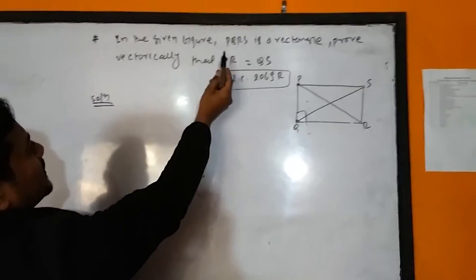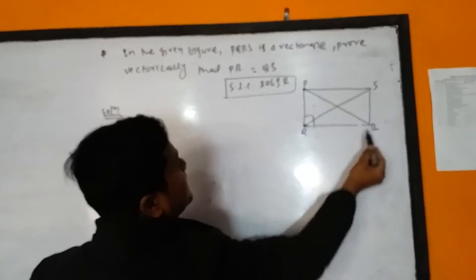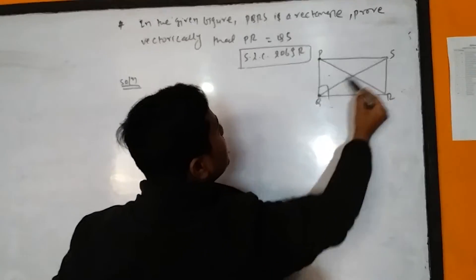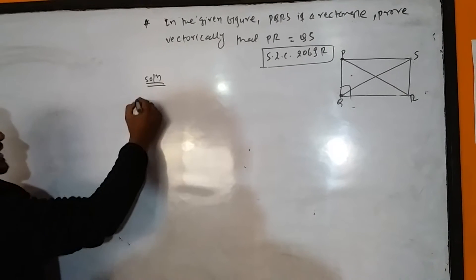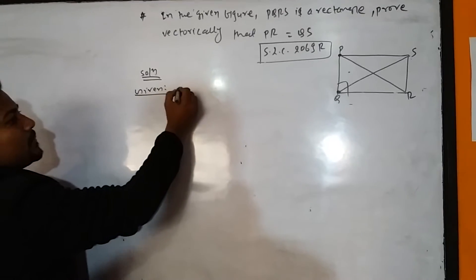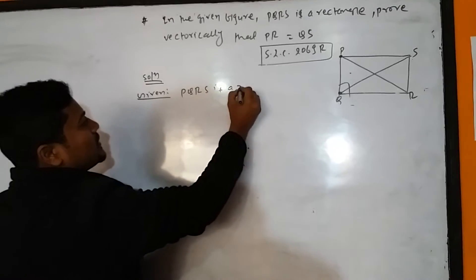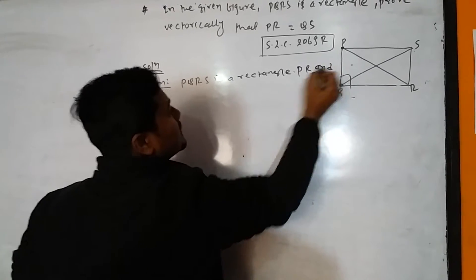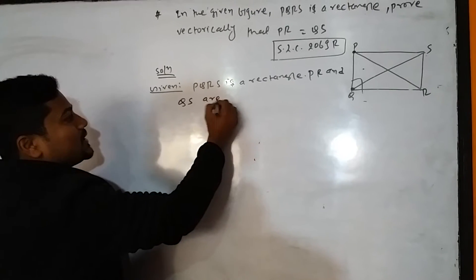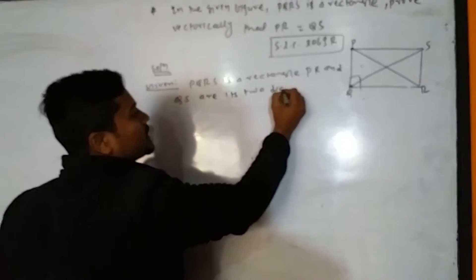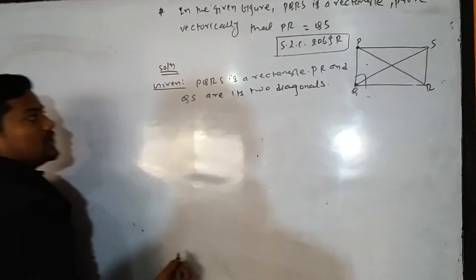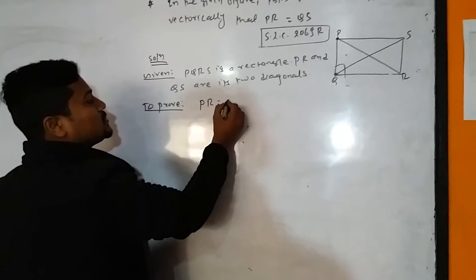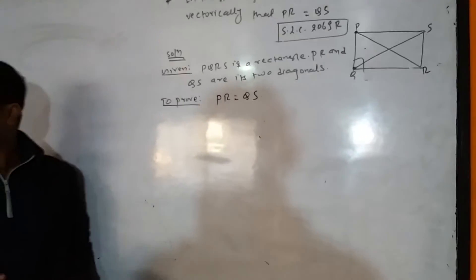In the given figure, PQRS is a rectangle. We have to prove vectorically that PR is equal to QS. Given: PQRS is a rectangle, and PR and QS are two diagonals. We have to prove that PR is equal to QS vectorically.